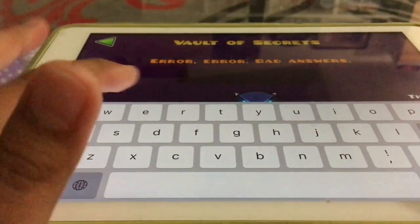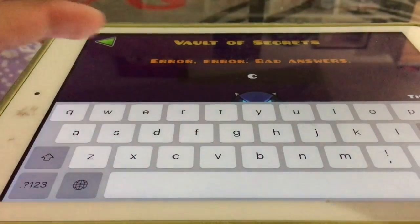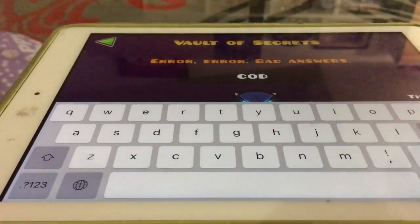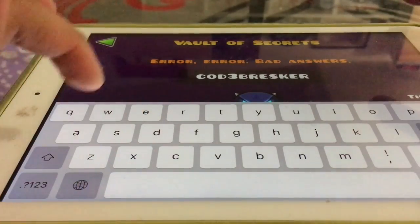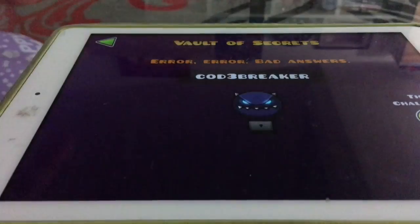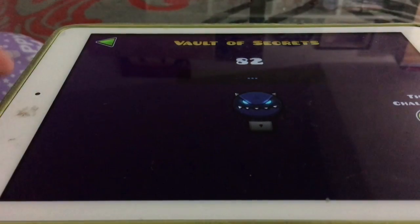So first of all, what you need to do is type code breaker like this. Now it's giving me a series of numbers.